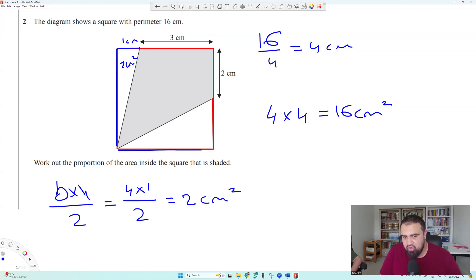And this one is 4 times the height, which is 2 centimeters squared. So it's base times height. So 4 times 2, 8 divided by 2 is 4 centimeters squared.